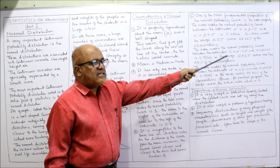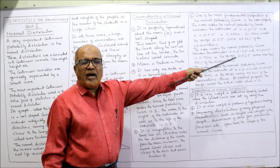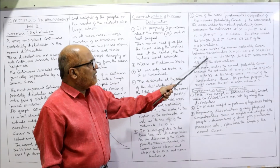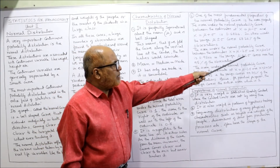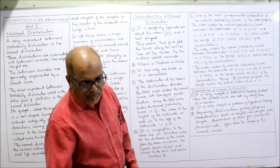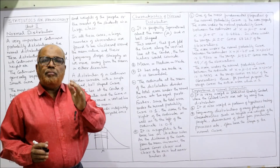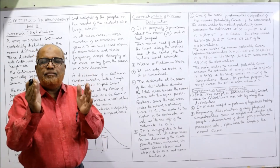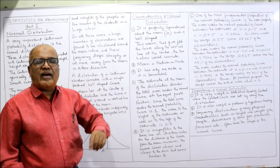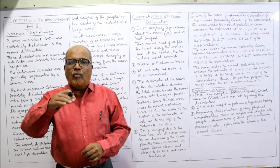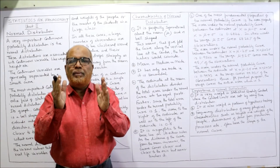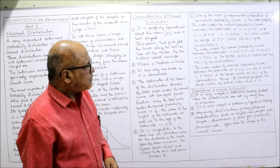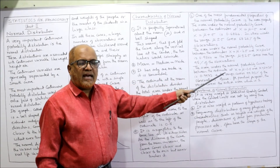The area under the normal probability curve between x = μ − 2σ and x = μ + 2σ is 0.9544, meaning the range μ ± 2σ covers more than 95% — specifically 95.44% — of observations. So when we extend to two standard deviations on either side of the mean, more than 95% of the total area is covered.